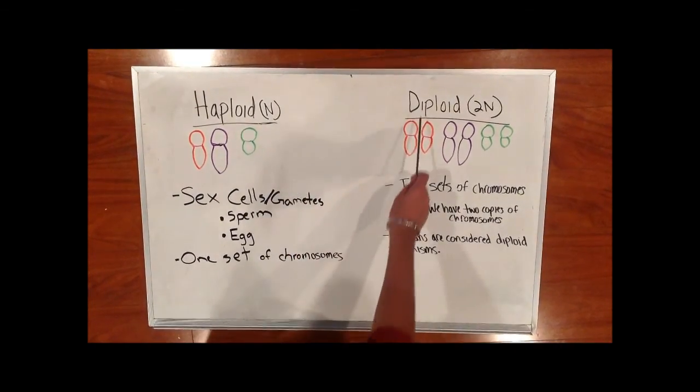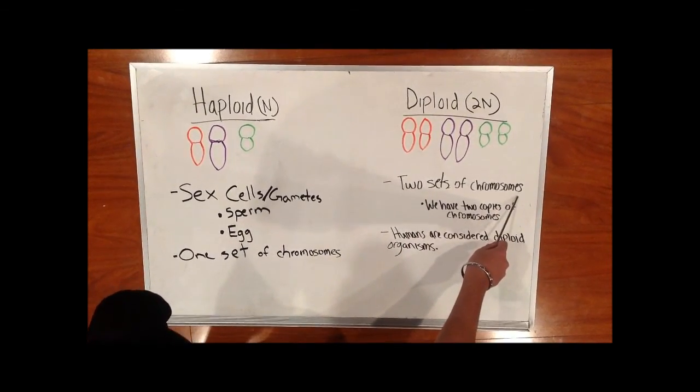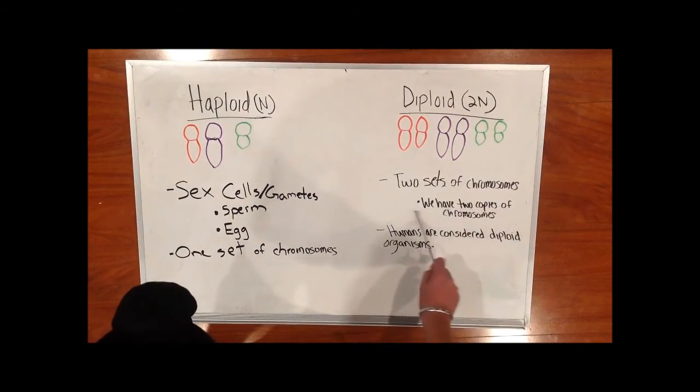Diploid cells, however, have two sets of chromosomes. This can be represented by 2N. Humans are considered diploid organisms because we have two copies of chromosomes.